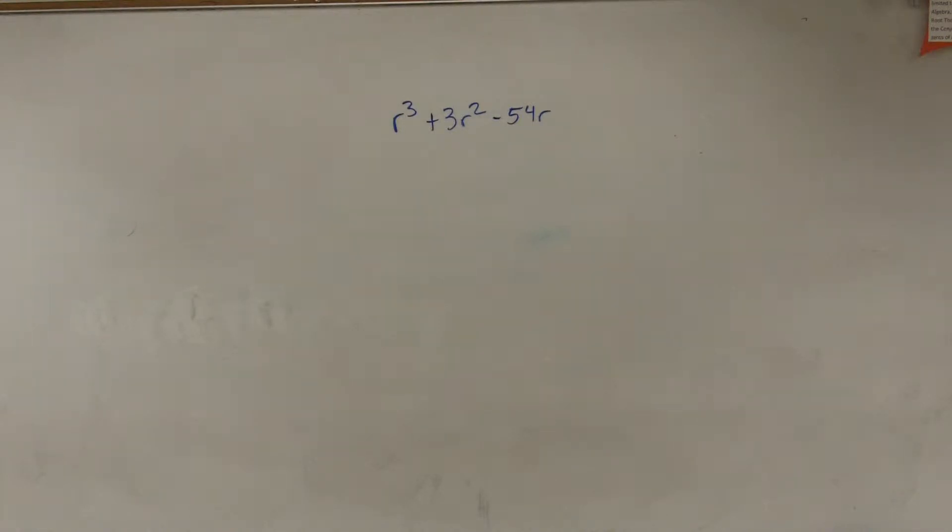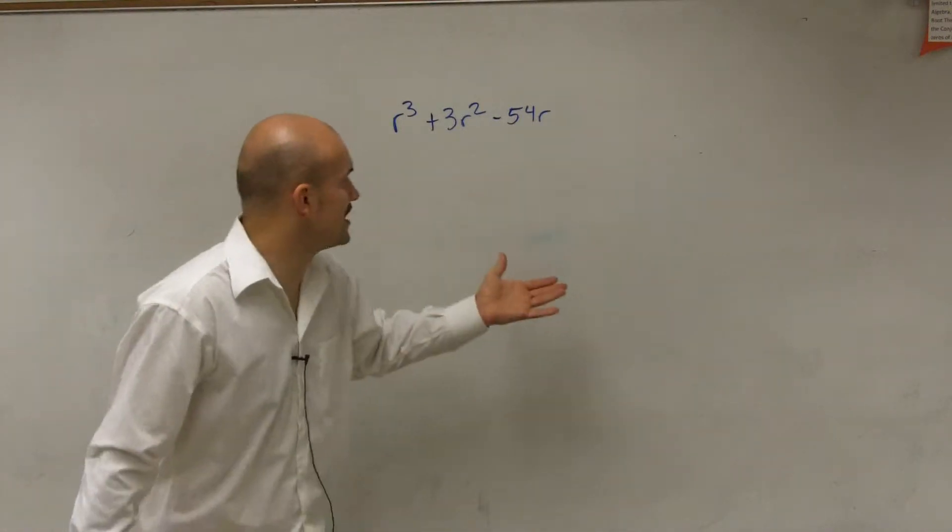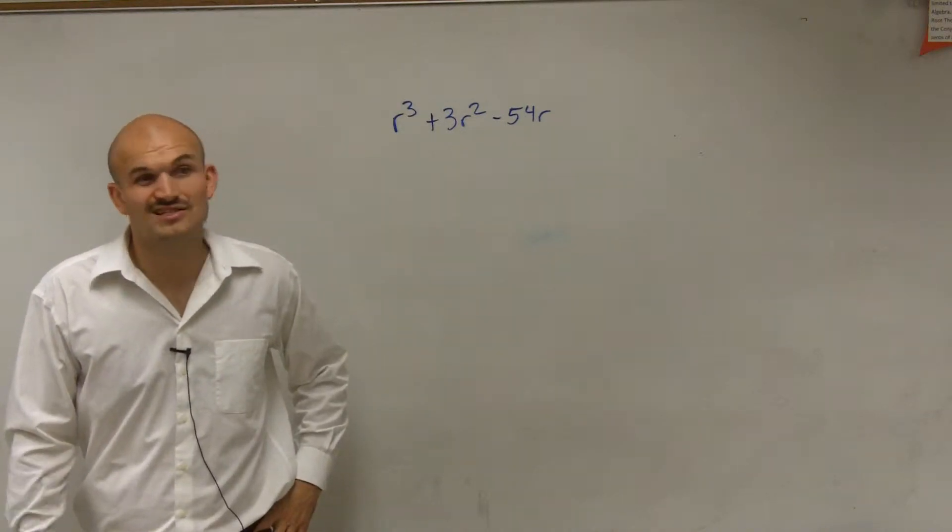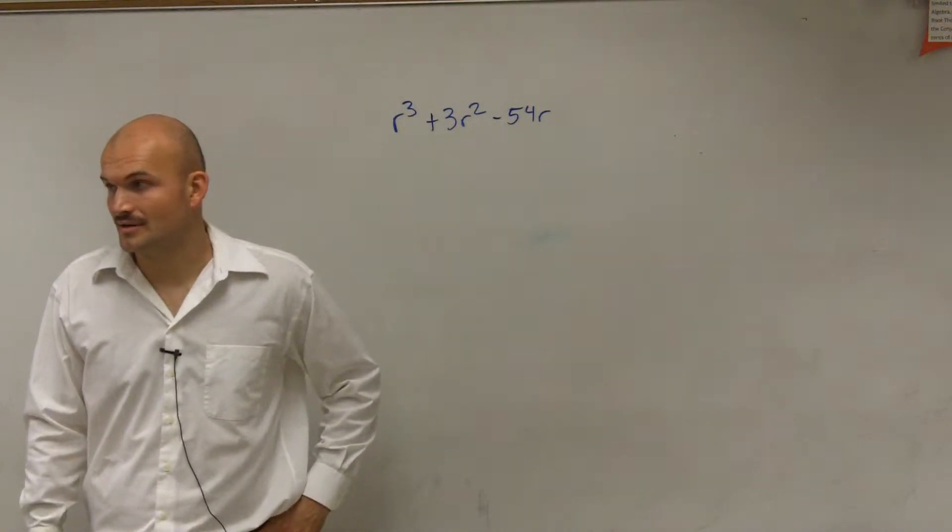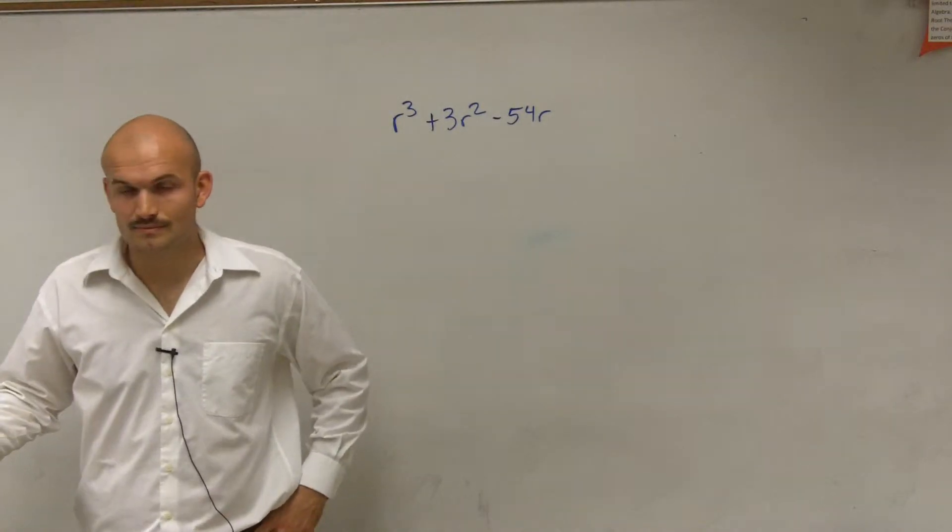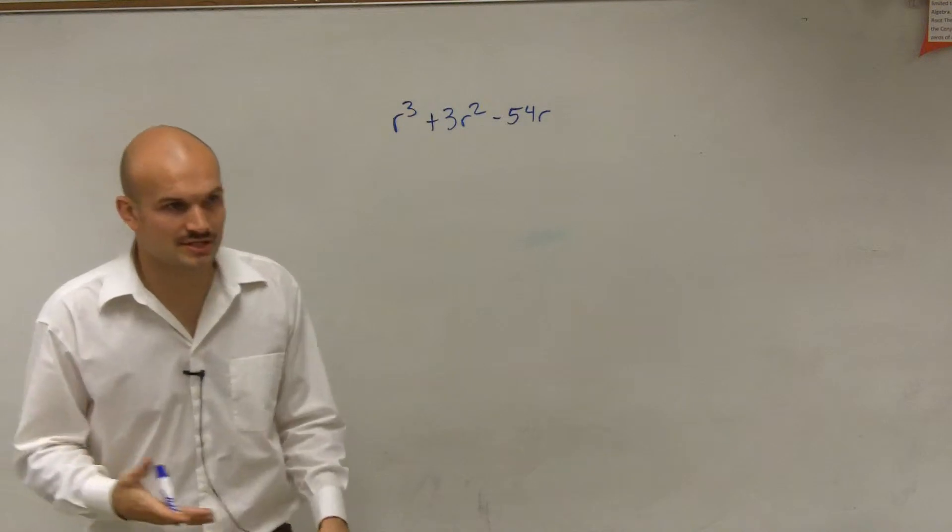All right. So for this problem, it says r cubed plus 3r squared minus 54r. And it just says to factor it. There's no equation sign. There's no solving.